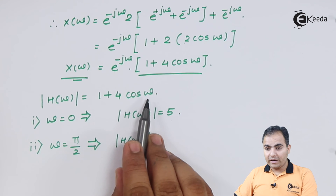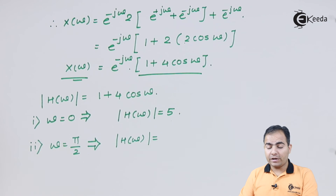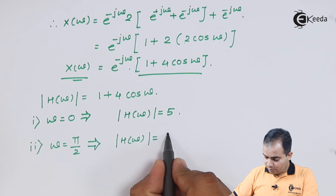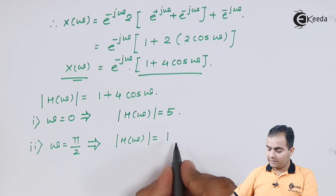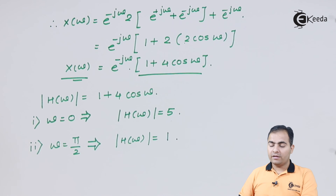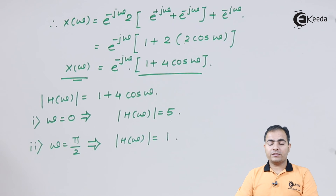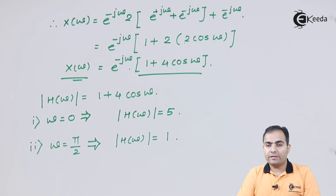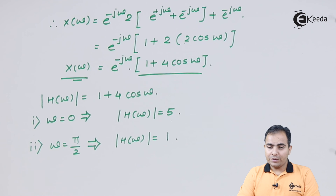Now substituting omega equals pi by 2: cos of pi by 2 is always 0, and 0 times 4 is 0, so the result is 1. That's how we substitute the omega values into the magnitude response. That's all for now — we will study a new numerical in the next video, so stay tuned to Ikeda and subscribe for more videos. Thank you!